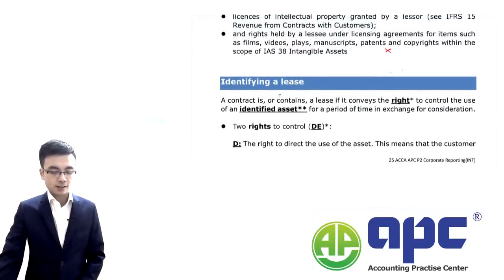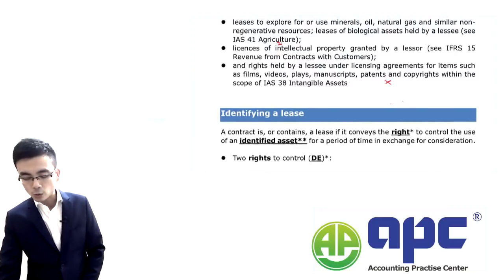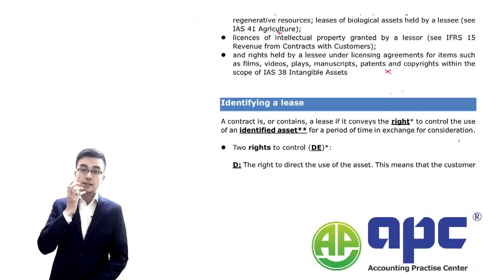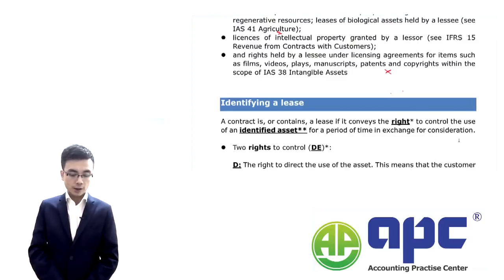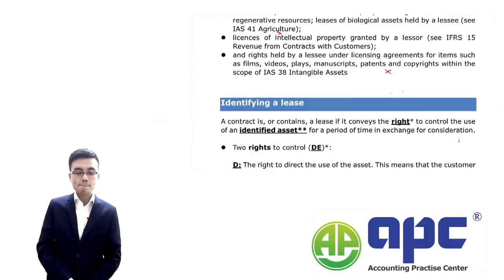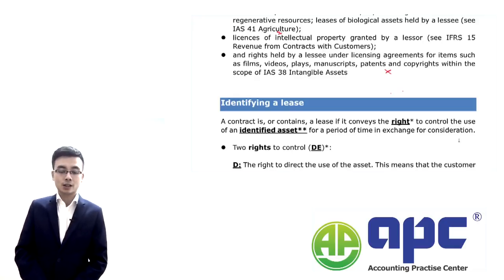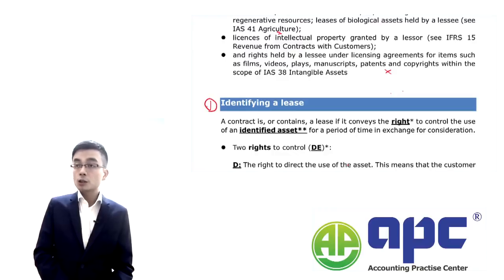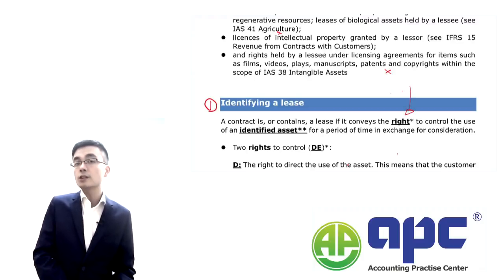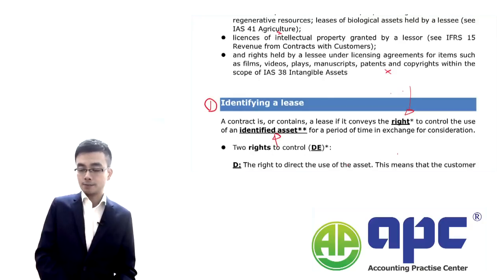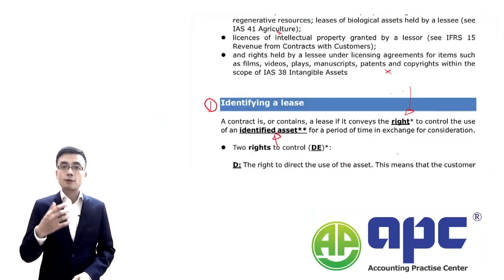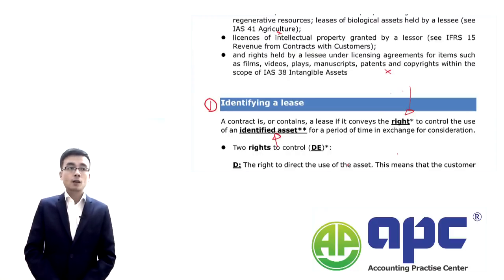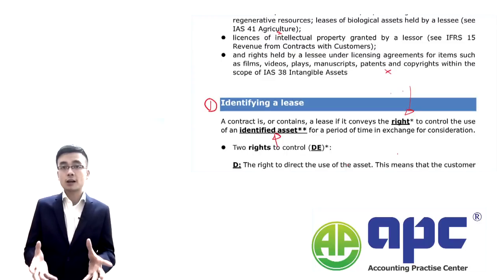IFRS 16 tells us whether or not something will be a lease contract. If you were to apply lease accounting, the first step is to make sure this will be a lease contract. It should be a contract, and secondly, from the lessee's point of view, we've got a right to control the use of an identified asset. If you haven't got the right to control the asset, we cannot recognise the right-of-use asset.